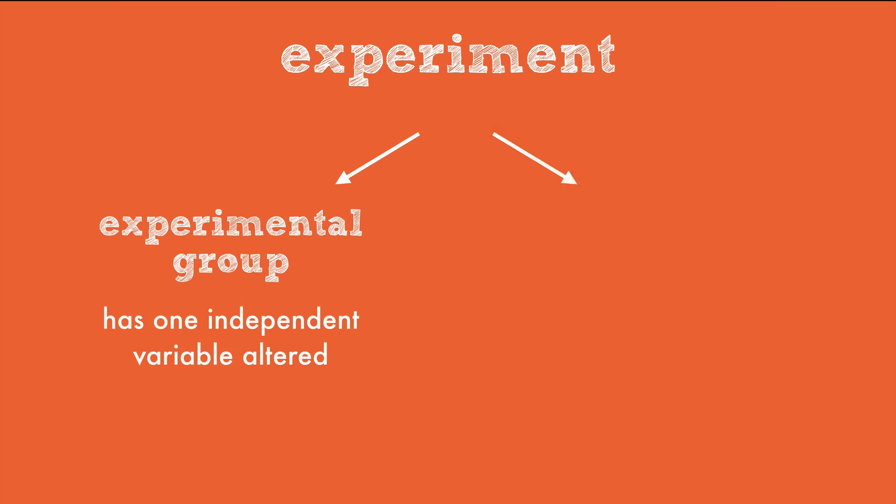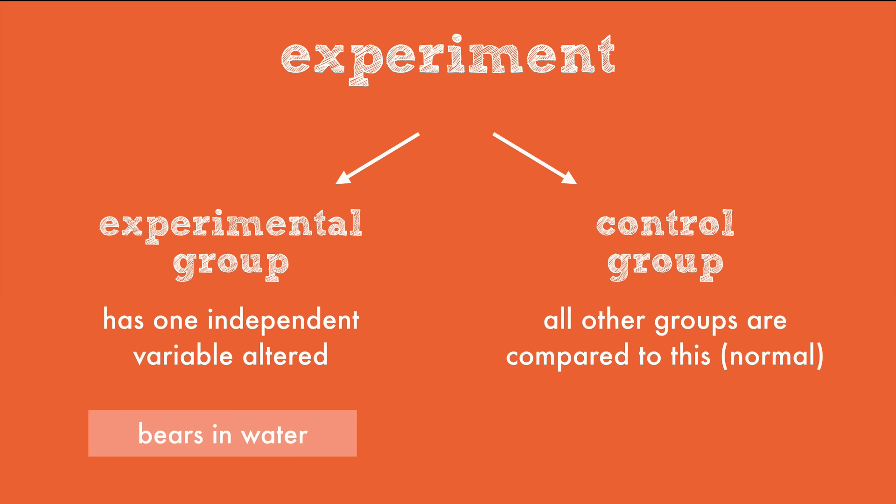A valid experiment will have both an experimental group, where the independent variable is altered, and a control group, which can be used to compare the experimental group to the normal or unaltered version. In the gummy bear experiment, the bears placed in water are the experimental group, and the dry gummy bears are the control, because that's how gummy bears normally are.